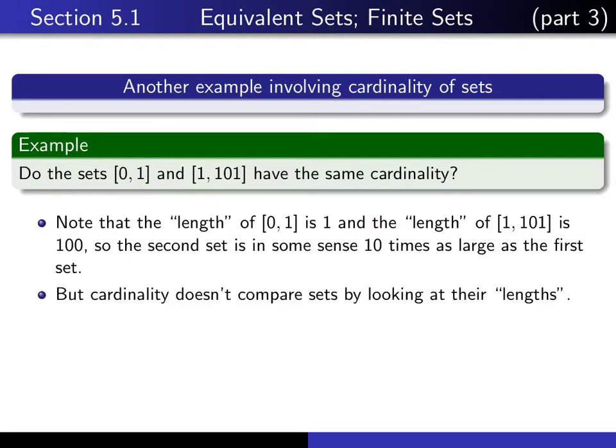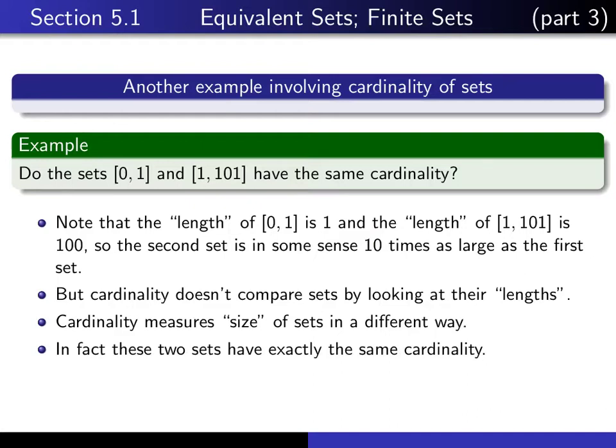But cardinality doesn't measure sizes of a set by looking at its length. It measures the size of a set in a different way. So it turns out that these sets do have exactly the same cardinality, even though in some sense it looks like one of them is 100 times the size of the other one.